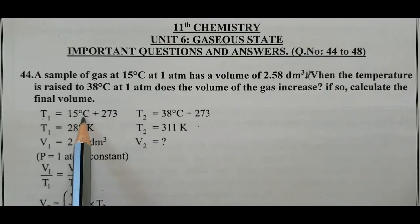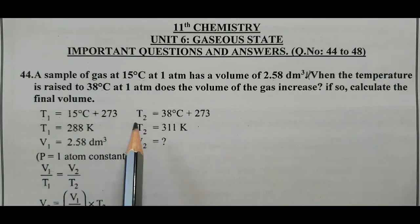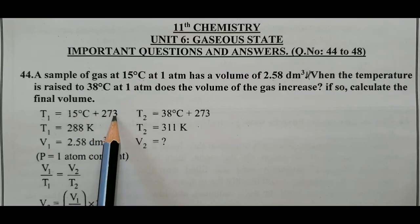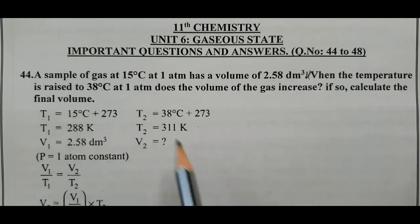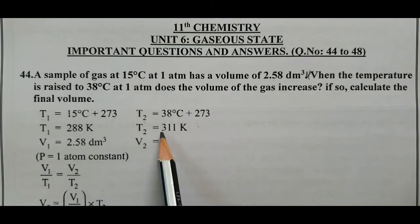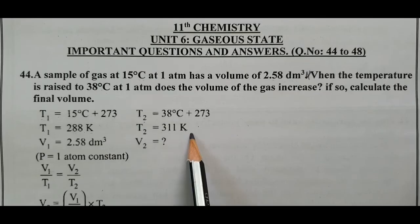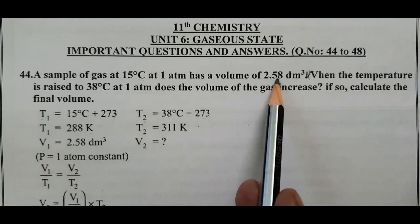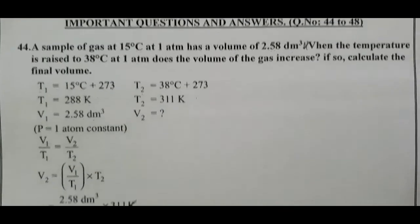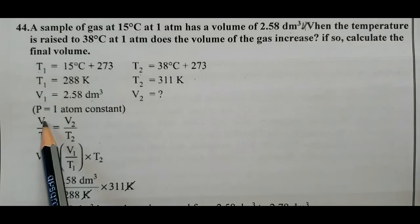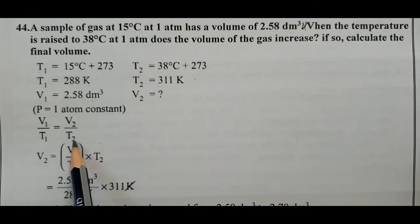Initial temperature T1 = 15°C. Converting to Kelvin: 15 + 273 = 288 K. T2 = 38°C + 273 = 311 K. Initial volume V1 = 2.58 decimeter cube. According to Charles's Law: V1/T1 = V2/T2.